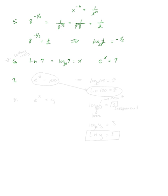Let's say e to the z power equals 100. Switching back to logs: write down log, the base is e, the exponent z goes on the right of the equals, and the result 100 goes inside. Since log base e has shorthand notation, I write it as ln of 100 equals z. All three forms are equivalent.